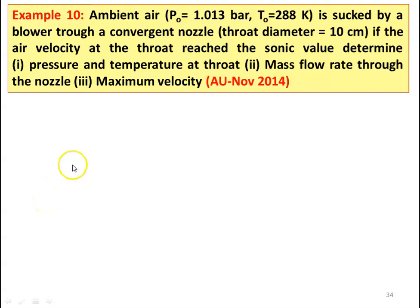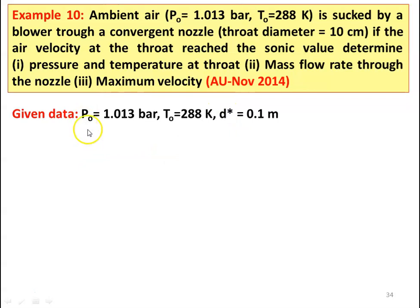Example number 10 from November 2014 question paper. Ambient air with stagnation condition PO equal to 1.013 bar and TO equal to 288 Kelvin is sucked by a blower through a convergent nozzle of throat diameter 10 centimeter. If the air velocity at the throat reaches the sonic value, determine the pressure and temperature at the throat section, mass flow rate through the nozzle and the maximum velocity. Stagnation pressure 1.013 bar, stagnation temperature 288 Kelvin, throat diameter D star equal to 0.1 meter.